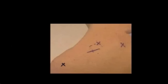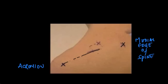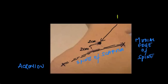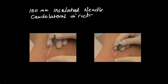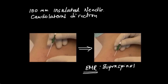The landmarks we need to identify are the acromion process, shown here at the lateral edge of the scapular spine, and the medial edge of the scapular spine. We combine these two points to get the spine of the scapula. We choose a point at the midpoint of this line and then place the needle two centimeters cranially and two centimeters medially to the midpoint of the spine of the scapula. We then use a 100 millimeter short bevel insulated needle, directed in a caudolateral direction towards the humerus at an angle of about 45 to 60 degrees to the horizontal plane, aiming towards the suprascapular notch where the suprascapular nerve lies.